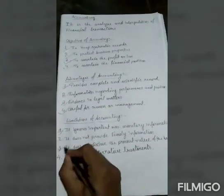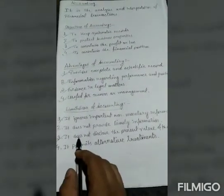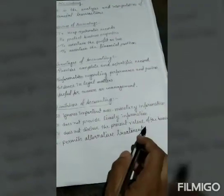Now, the next limitation is it does not disclose the present value of the business. In accounting, the position of the business as on a particular date is shown by a statement known as balance sheet. The realized value of each asset, if sold today, can't be known by studying the balance sheet.